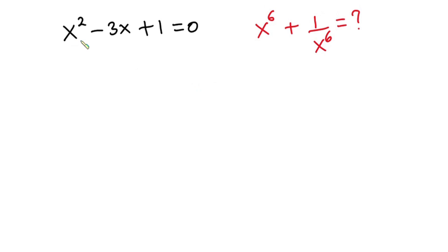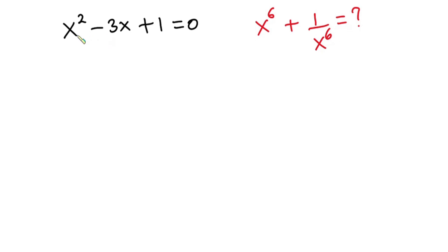Hello everyone. In this video we have this nice problem: x squared minus 3x plus 1 is equal to 0, and we have to find the value of x to the sixth power plus 1 over x to the sixth power. In other words, we'll be manipulating this equation to find this value, using it as our reference.